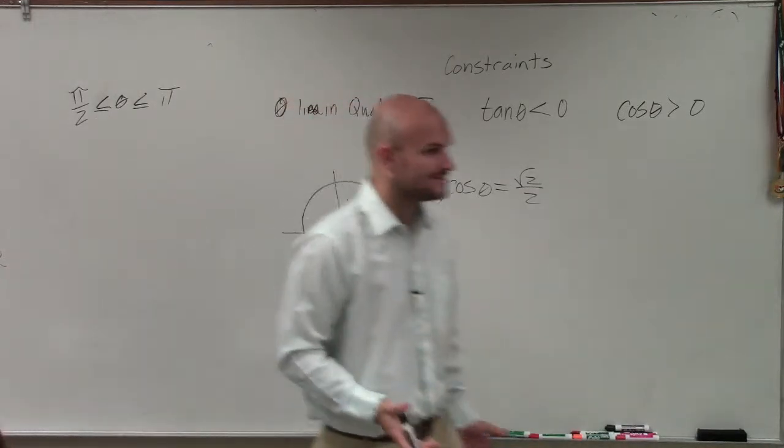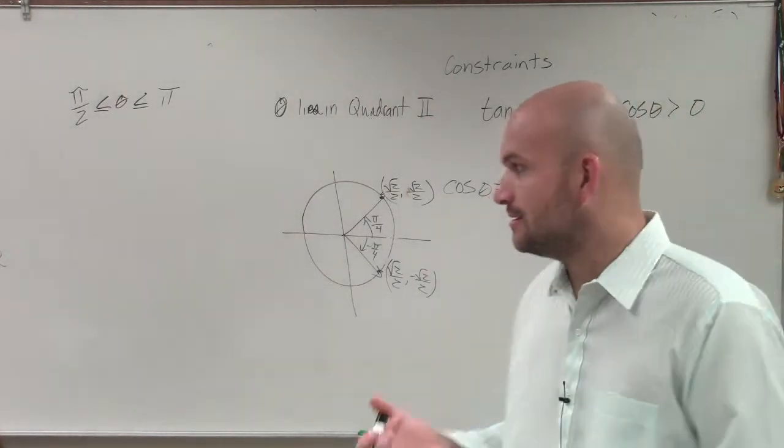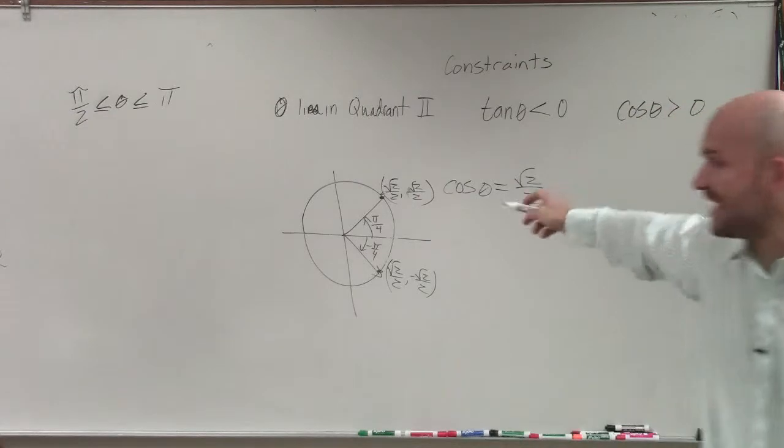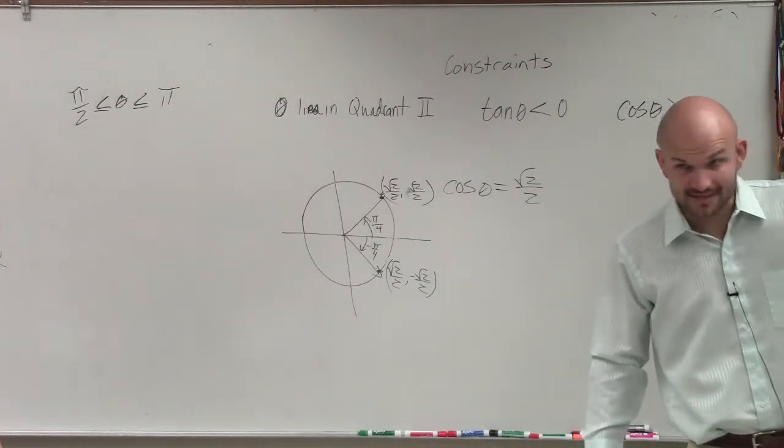But what I want you guys to understand is that the value of cosine, or the value of an angle when cosine equals square root of 2 over 2, there's two answers.